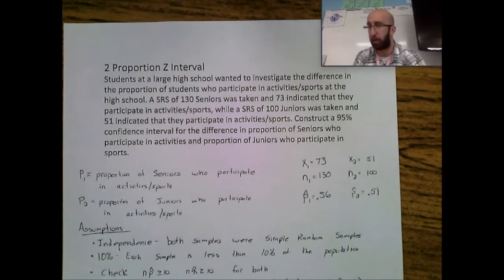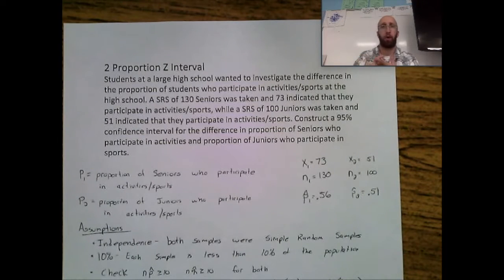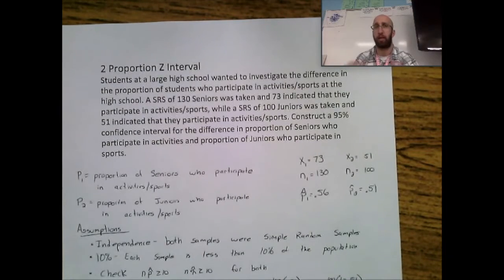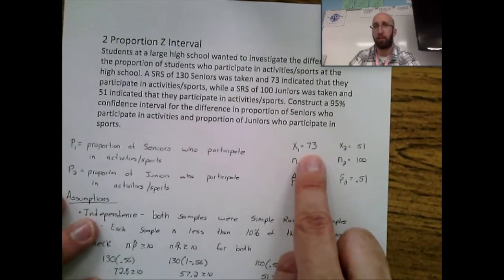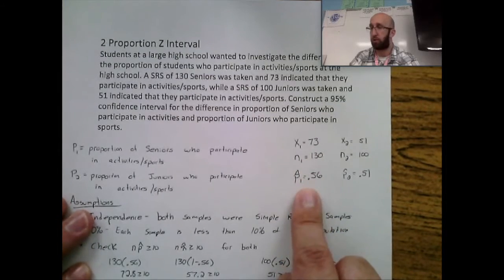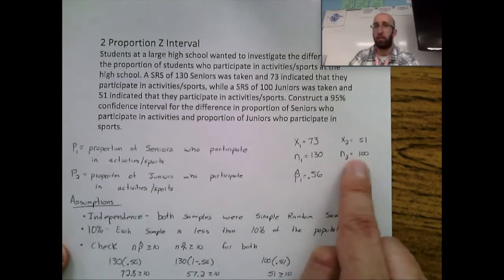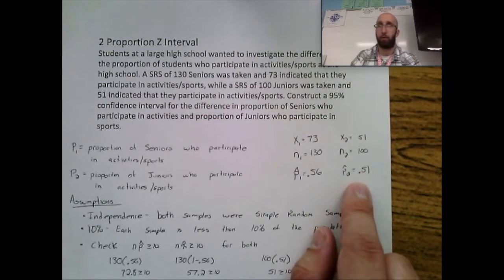When doing confidence intervals, we go through PANIC: parameters, assumptions, name it, interval, and context. First, I pull out relevant information off to the side. I recognized this as a two-proportion situation because I have two different proportions. X1 and N1: 73 seniors out of 130 seniors gives a p-hat of 0.56. Then 51 juniors out of 100 total juniors gives a p-hat of 0.51.